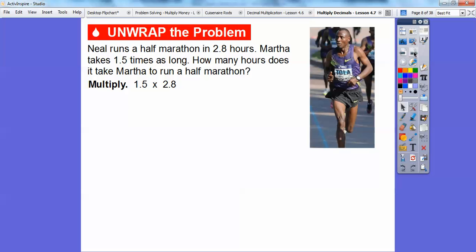Neil runs a half marathon in 2.8 hours. Martha takes 1.5 times as long. How many hours does it take Martha to run a half marathon? So we're going to multiply 1.5 times 2.8. We'll just go ahead and multiply this whole number. Let's just pretend like there's no decimals. So 28 times 15, and then we'll move the decimals over later. Here we go.